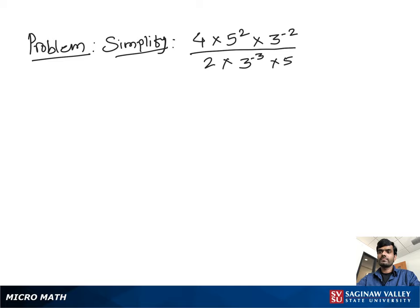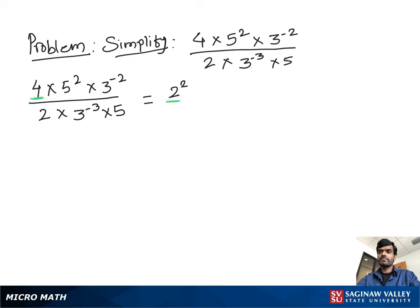Simplify 4 times 5 squared times 3 to the negative 2, divided by 2 times 3 to the negative 3 times 5. You can write 4 as 2 squared, so you can write 2 squared times 5 squared.